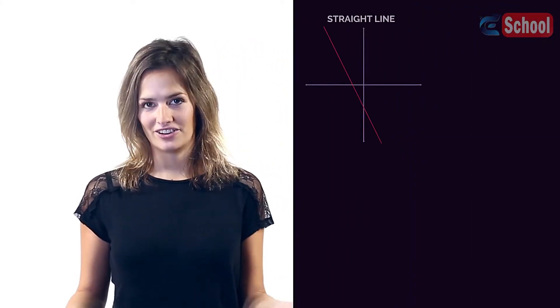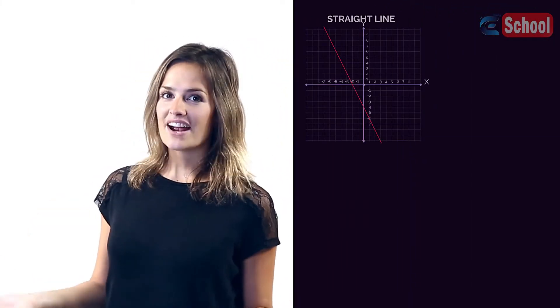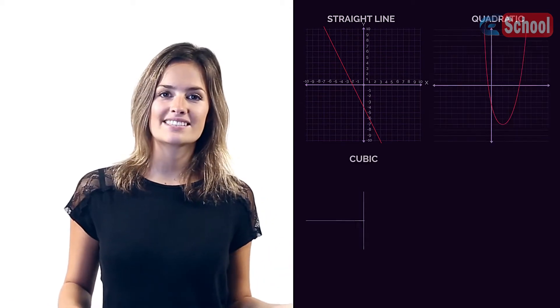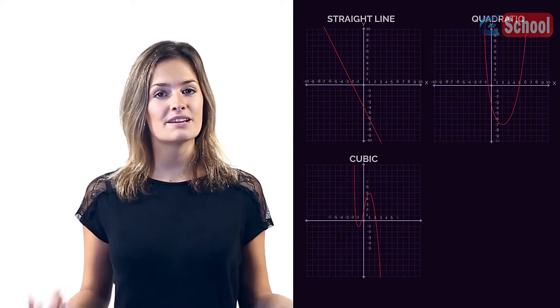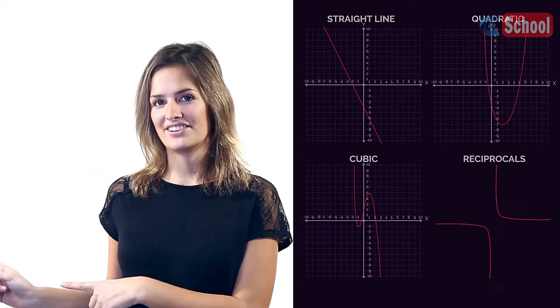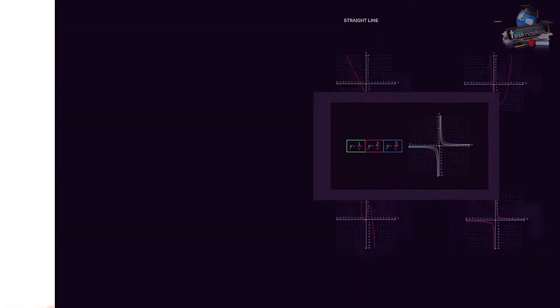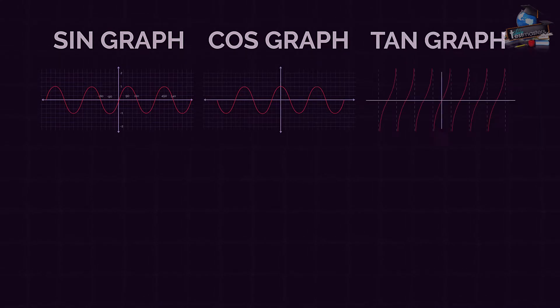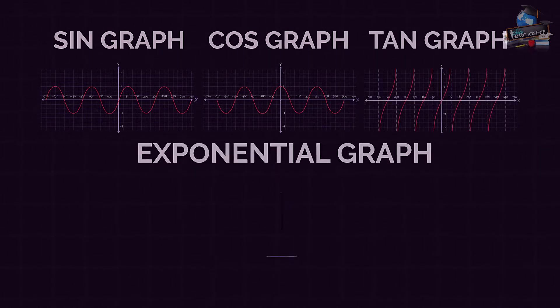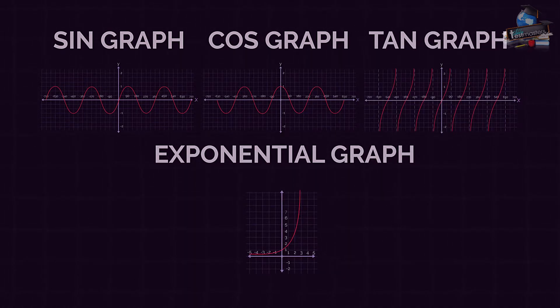So you probably already know what straight lines look like on a graph, and quadratics, cubics, and we even saw reciprocals. In this video there are just a few more graphs that we need to recognize: the sine, cosine, and tangent graphs, and exponential graphs.